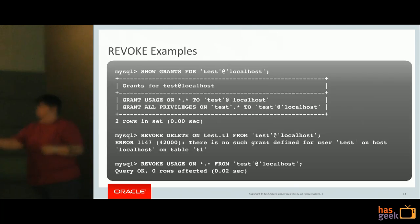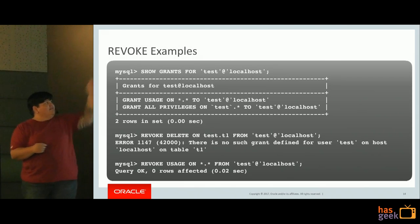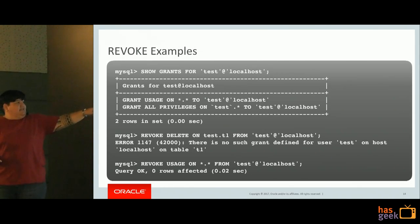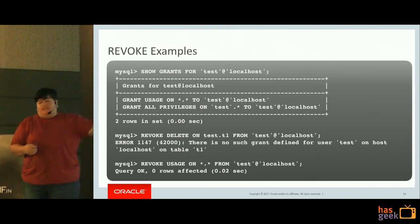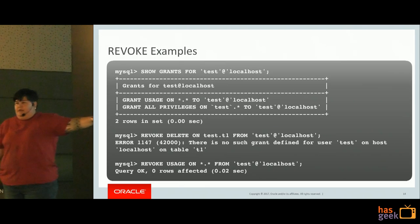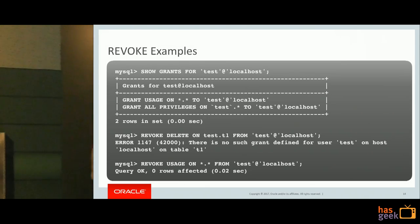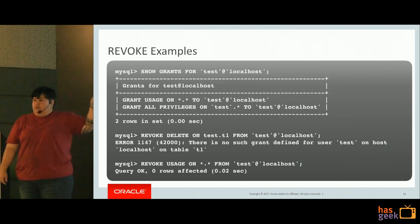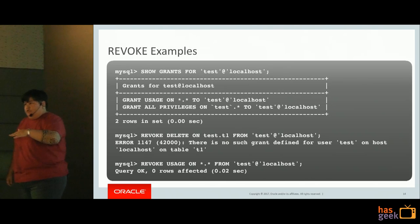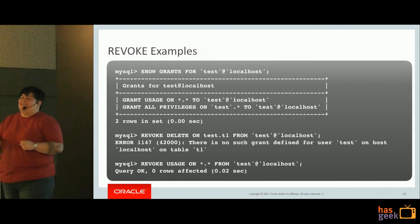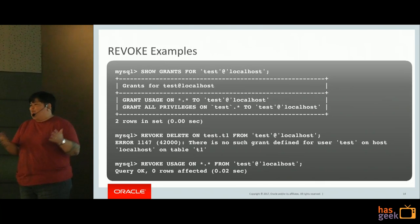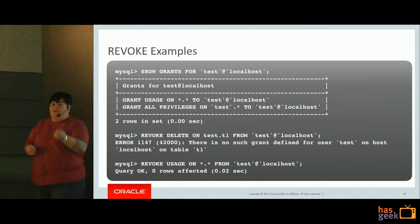If you have 'Bob@localhost' and say REVOKE permissions for Bob with no host value, 'Bob@localhost' will still stay there because 'Bob@localhost' is not the same as 'Bob@wildcard.' For example: I'm trying to REVOKE the DELETE permission on test.t1 for 'test@localhost' and I get an error. Because their privilege says GRANT ALL - REVOKE will not extract DELETE out of GRANT ALL. You literally have to REVOKE ALL and then grant all the permissions back except DELETE. It's not smart, but that's how it works.